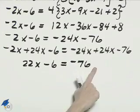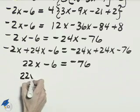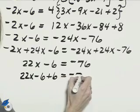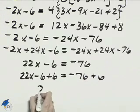Now let's add 6 to both sides to get 22x by itself. 22x minus 6 plus 6 equals negative 76 plus 6. On the left is 22x.